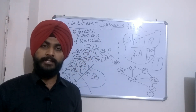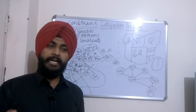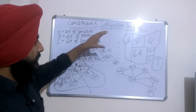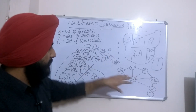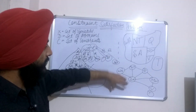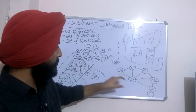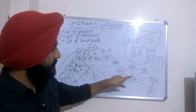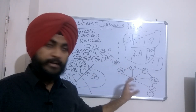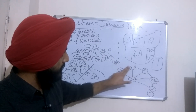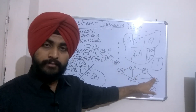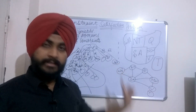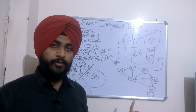Aap is problem ko solve kar sakte ho, and ab yeh problem ek solvable problem mein aa jaati hai. Yeh hai basically ek structure — maine uska graph banaya, isi cheez ko maine graphically represent kiya. Yeh Western Australia, and yeh nodes kaise ek doosre ke saath linked hain — unme kaun se neighbors hain yeh aapko bata rahe hain. Western Australia aur New South Wales neighbor nahi hain — koi direct node nahi unhe connect karti.